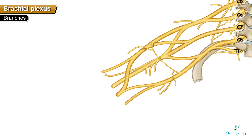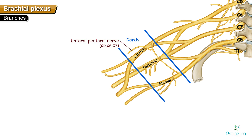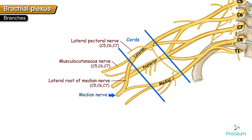The branches from the lateral cord of the brachial plexus are the lateral pectoral nerve, musculocutaneous nerve, and the lateral root of the median nerve. You can remember these with the mnemonic LML: L for lateral pectoral nerve, M for musculocutaneous nerve, and the second L for the lateral root of median nerve.